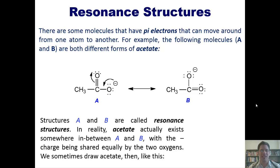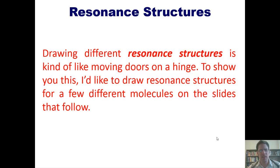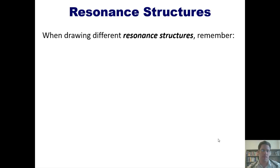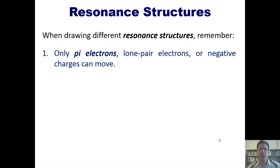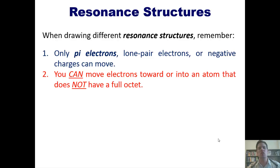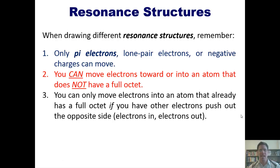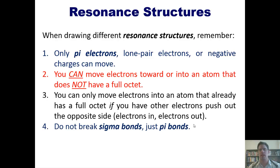In reality, acetate actually exists somewhere in between A and B, with the negative charge being shared equally by the two oxygens. When drawing resonance structures, remember that only pi electrons, lone pair electrons, or negative charges can move. You can move electrons toward or into an atom that does not have a full octet. You can only move electrons into an atom that already has a full octet if you have other electrons that push out in the opposite direction — electrons in, electrons out. Otherwise, you violate octets. And last: do not break sigma bonds, only pi bonds.